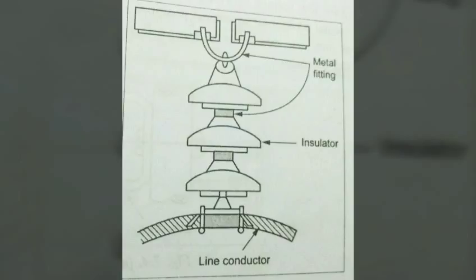The conductor is suspended at the bottom end of the string. The other end of the string is secured to the cross arm of the tower. The number of disks in series depends upon working voltage. Each unit or disk is designed for 11 kV. For 110 kV, it carries 7 or 8 disks. For 220 kV, it carries 13 or 14 disks.